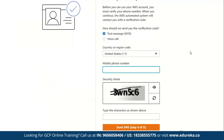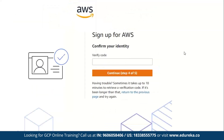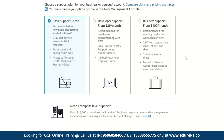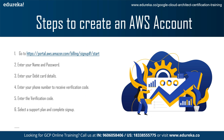Next, enter your phone number to receive the verification code. Then enter the verification code you have received. AWS provides four support plans: Basic, Developer, Business, and Enterprise. Since we are just beginning, I have chosen the basic support plan. You can choose any support plan and complete the sign-up process. This is how we set up our AWS account.